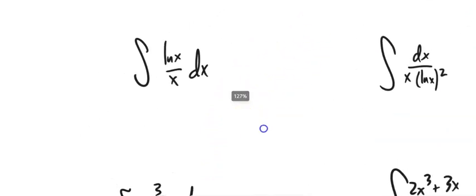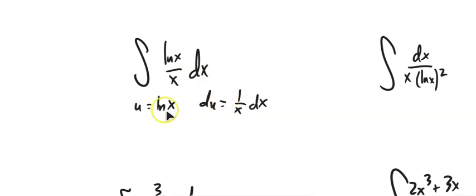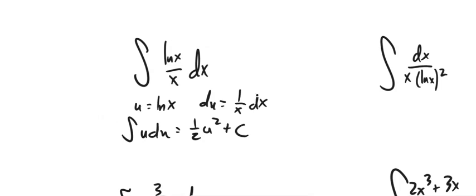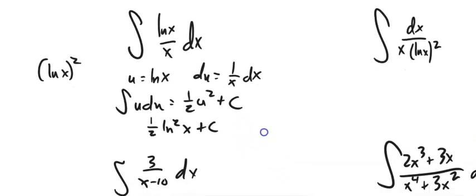The integral of ln(x) divided by x: I'm going to do a u-substitution, letting u equal ln(x). The derivative of ln(x) is 1/x, so du = (1/x)dx. That means (1/x)dx gets replaced by du, so this becomes the integral of u du, which is one-half u squared plus C. Plugging u back in, we get one-half times (ln x)² plus C.